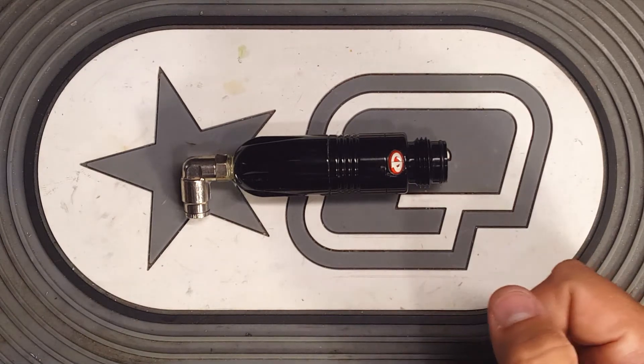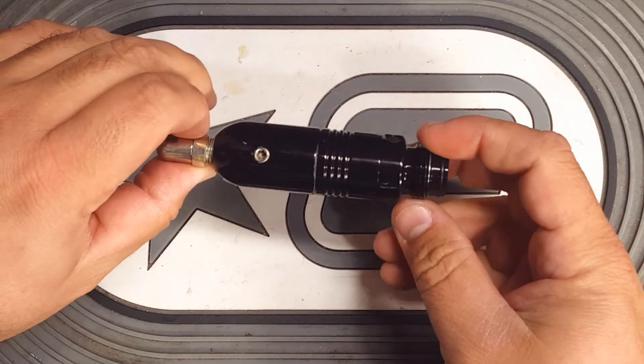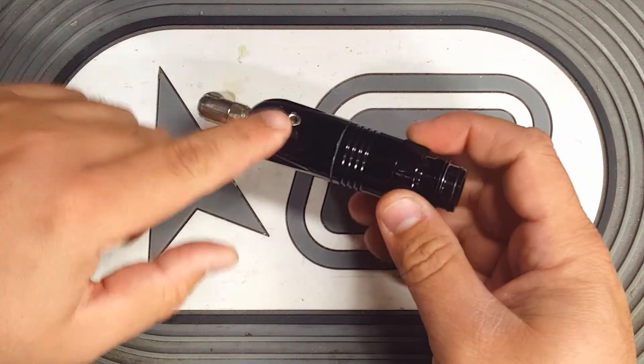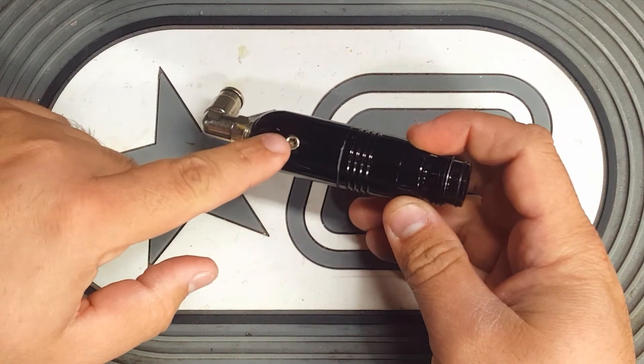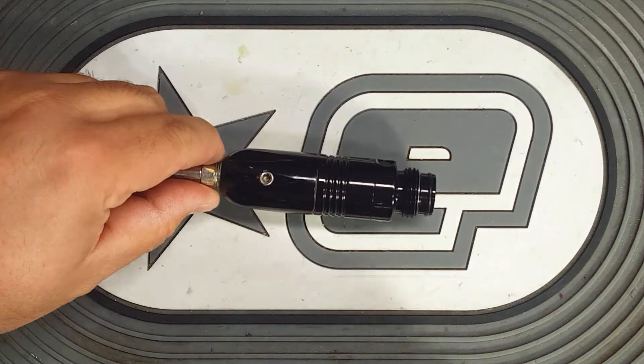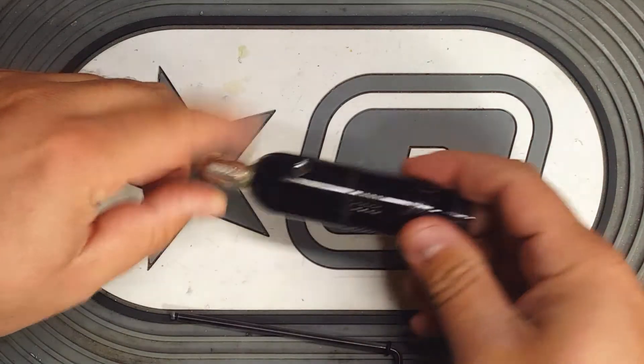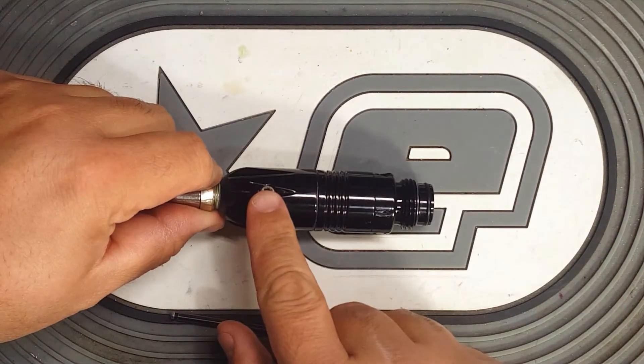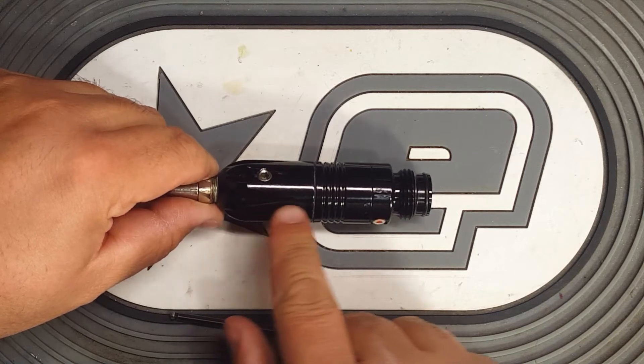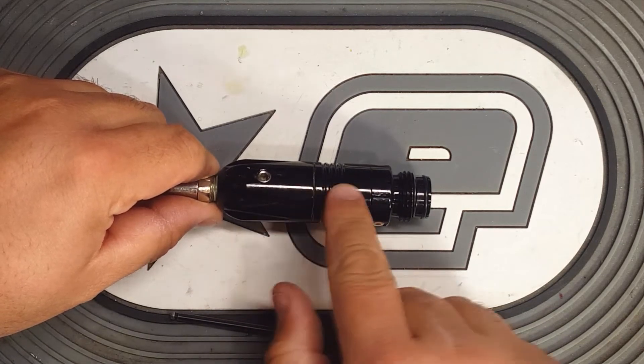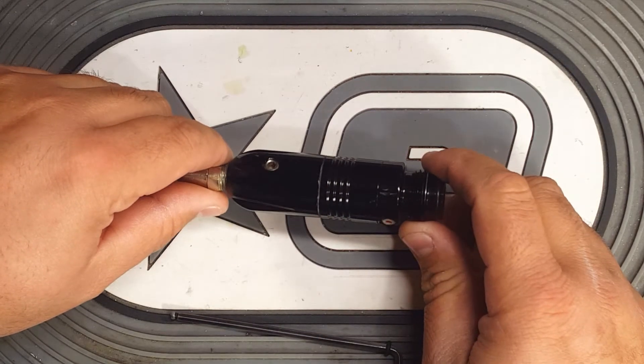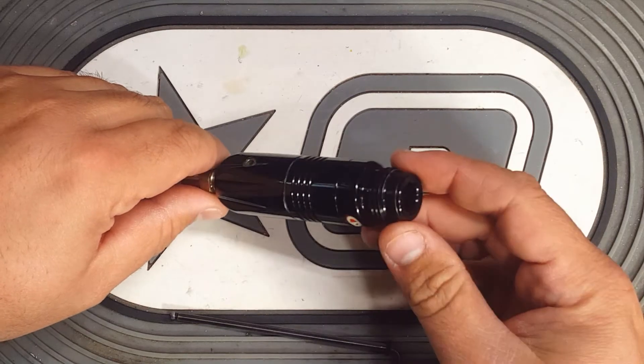So real quick to get into this, the Regulator is a moving base reg. This is your adjustment point here, it uses an eighth inch Allen key. Air comes in the bottom and that adjustment screw moves the Regulator base which seals against the bottom of the piston inside to change your pressure output on the top.